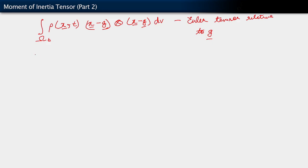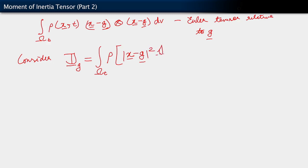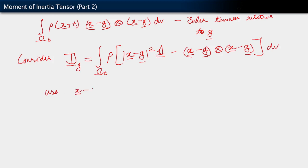Note that the moment of inertia tensor J_g equals the integral over omega_t of ρ·(|x minus g|² times the isotropic tensor minus (x minus g) tensor (x minus g)) dV. Use the fact that x minus g equals Q times (reference position minus reference position of center of mass), which we showed when we rewrote the motion as translation of the center of mass plus rotation about the center of mass.